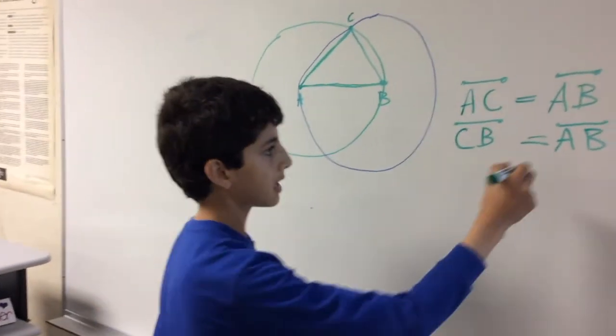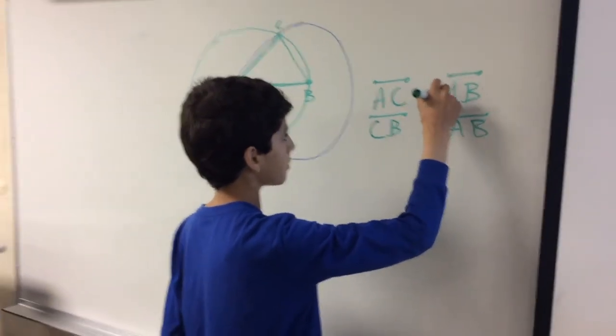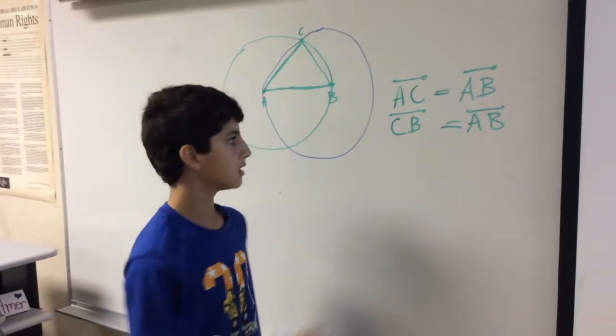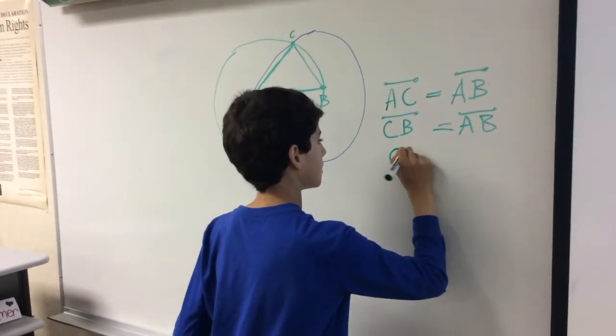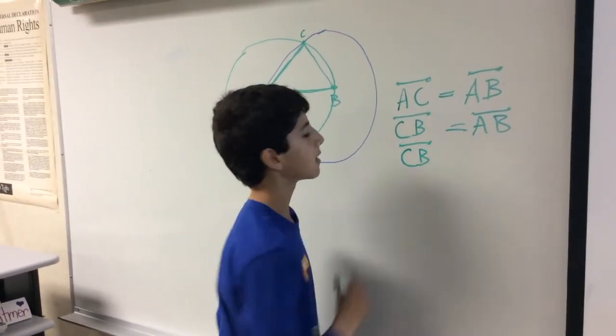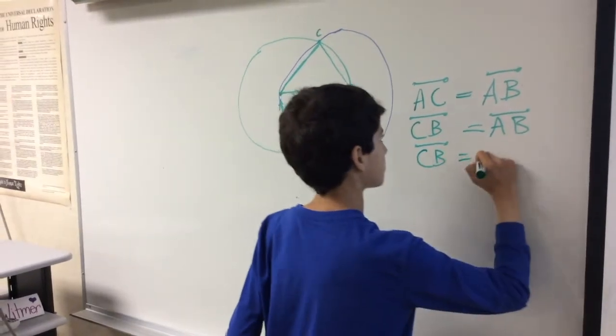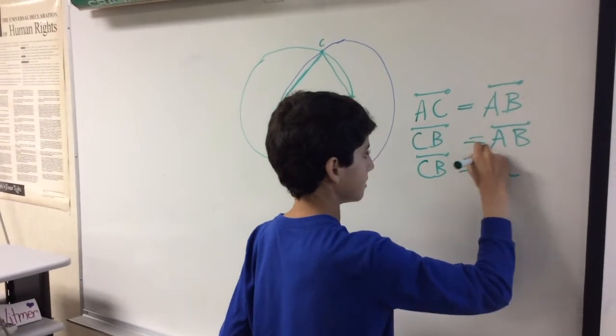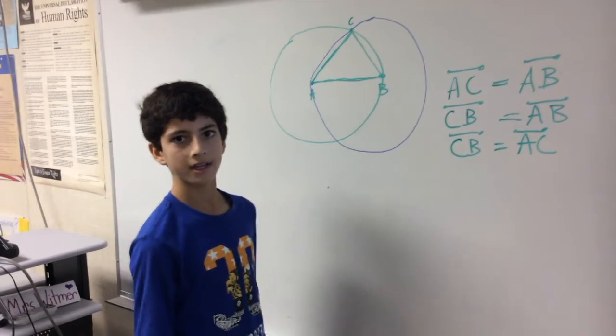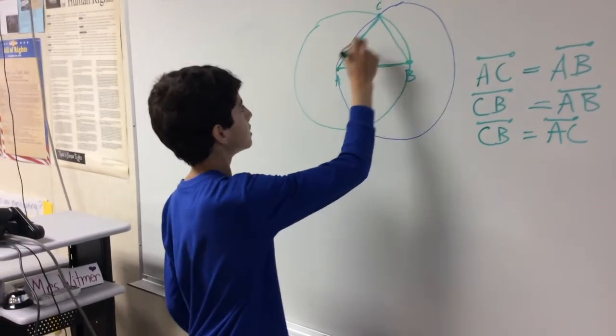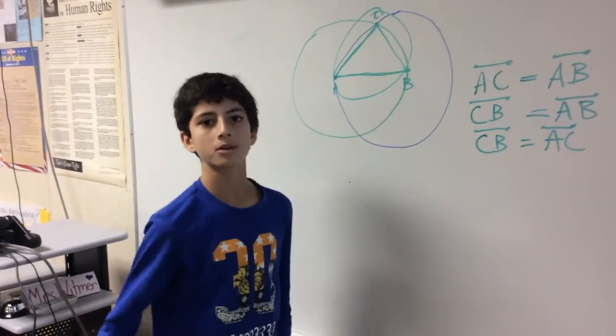Since we know that line segment AB equals line segment AC, then that means line segment CB equals line segment AC. So, there is my proof that this is an equilateral triangle.